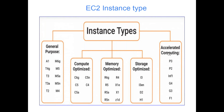One more category is Accelerated Computing. Even compared to Compute Optimized, Accelerated Computing has much higher configuration. It is used for things like graphics processing or very heavy online gaming where there is very high load — we can use these types of instances for that.